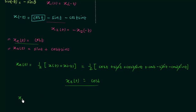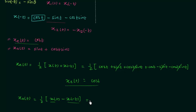Similarly, the odd component formula is xo(t) = ½[x(t) - x(-t)]. Substituting x(t) and x(-t) into this formula gives sin(t) + cos(t)sin(t). This completes method 1.